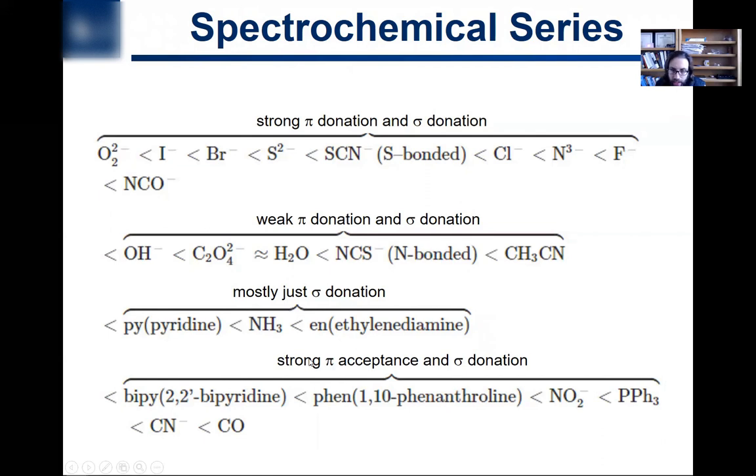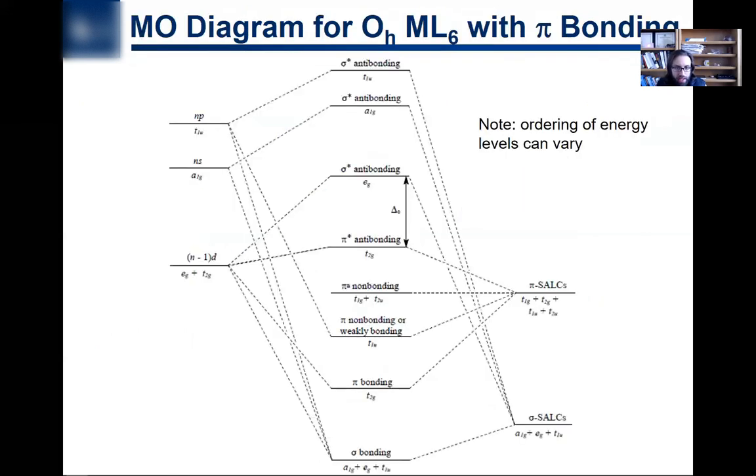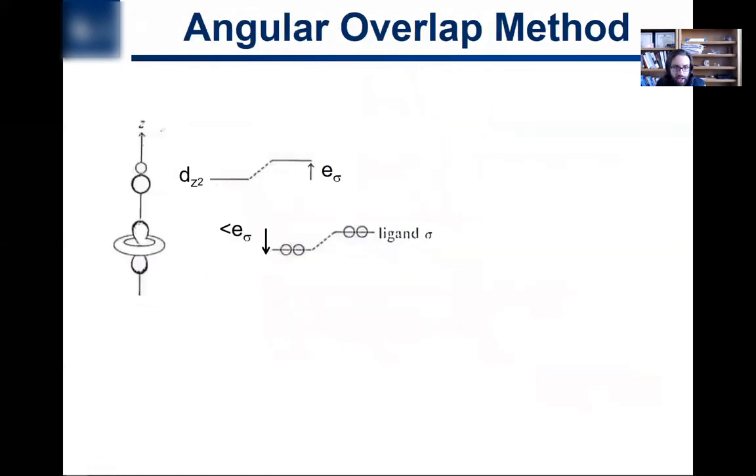And then you have these pi-accepting, strongly pi-accepting ligands that have empty pi-p orbitals that are of the right, or molecular orbitals, actually, that are of the right energy to accept electron density from the metals and thus have a very high magnitude delta O. So this is where this angular overlap method stuff comes into play, is we're really going to be simplifying the MO diagram. And now we know that we're talking about this going up and this one going down when we're talking about a strong sigma donor, stronger sigma donor, bigger effects there. So when we're talking about angular overlap method, that's all we have to consider when we're considering sigma donating ligands.